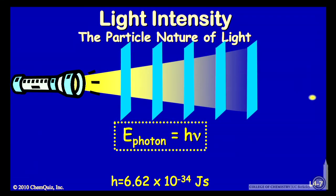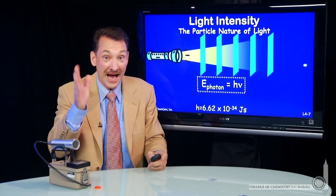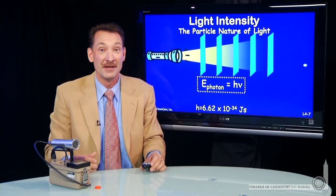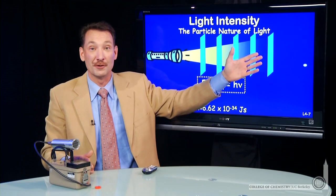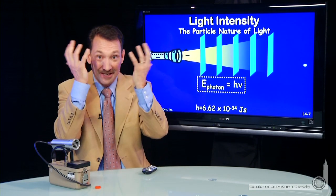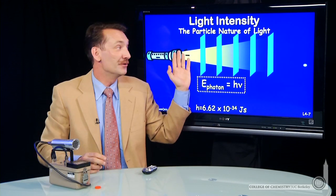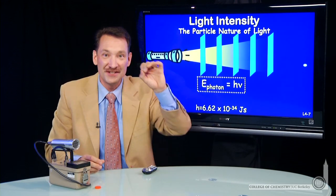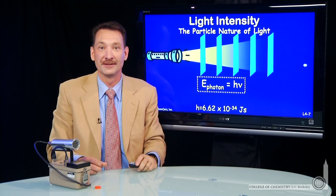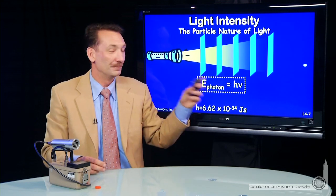Planck's constant is a very small number — 6.62 times 10 to the minus 34 joules seconds — which tells you this is an incredibly tiny amount of energy. But our eyes can detect it, and that's the interesting thing. If you do this experiment in a dark room where your eyes are acclimated to the dark, pupils wide open, you can actually reduce intensity until you see the individual flashes of photons. It's a fascinating experiment to do.